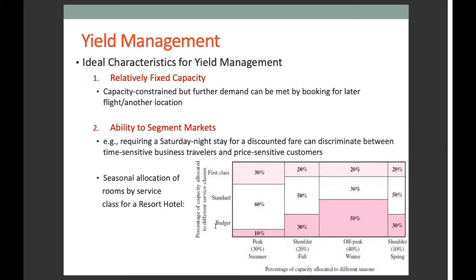The second characteristic is the ability to segment markets. For yield management to be attractive, the service company must be able to segment its markets into different customer classes. By requiring a Saturday night stay for a discounted fare, airlines can discriminate between a time-sensitive business traveler and a price-sensitive customer. Developing various price-sensitive classes of service is a major marketing challenge for a company using yield management.